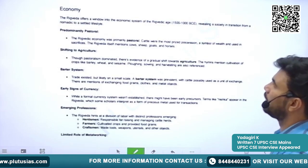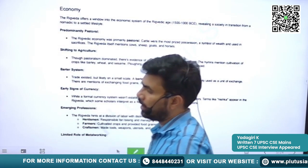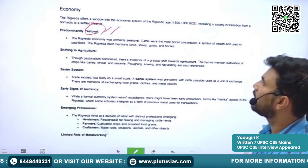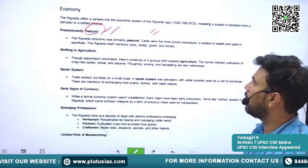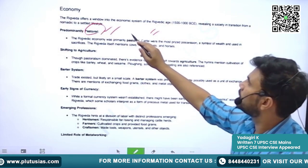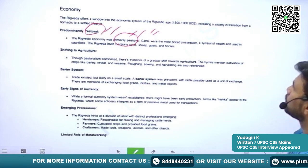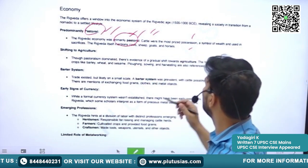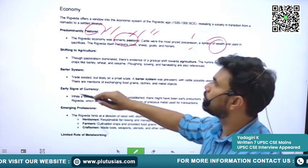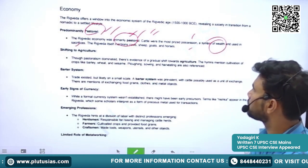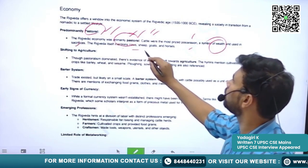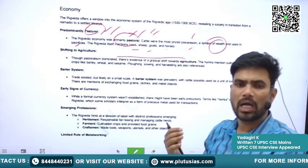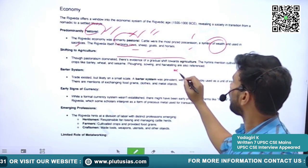Looking at the economy of the earlier Vedic people, they were predominantly leading a pastoral way of life. Their economy was dominated by rearing of animals — they were primarily pastoral people. Cattle was their most prized possession, symbolizing richness and wealth, and also used in sacrifices. The Rig Veda itself mentions cows, sheep, goats, and horses. Though pastoralism was dominant, they also practiced agriculture.